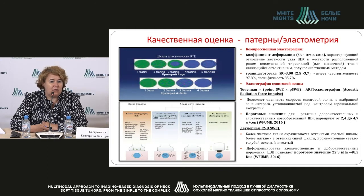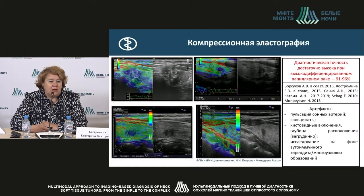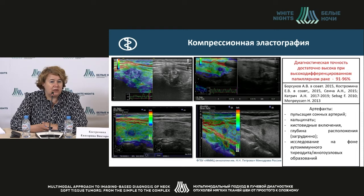The threshold value in kilopascal ranges from 22.3 up to 48.5. On the slide you can see different types of papillary cancer showing rather rigid parts in the structure of the thyroid. The diagnostic precision is quite high in cases of highly differentiated papillary cancer.